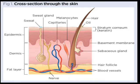Let us discuss something about the skin. The skin is made up of two layers: the epidermis and the dermis. The epidermis is the outermost layer that protects the body from excess water loss, entry of germs, and strong sunlight.